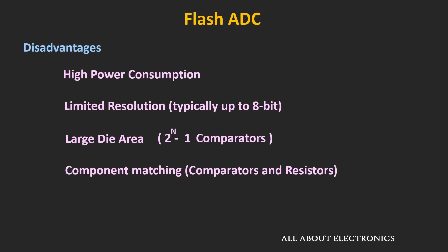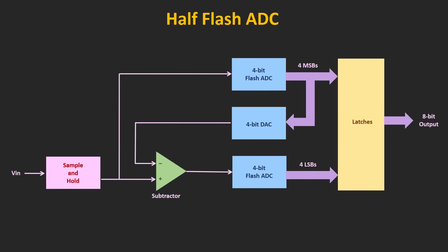In applications where good conversion speed at high resolution is required, or for the same resolution where less die size and low power consumption are needed, the half-flash ADC or sub-ranging ADC can be used. This is the basic schematic of the half-flash ADC. For an 8-bit conversion, it requires two 4-bit Flash ADCs and one 4-bit DAC.